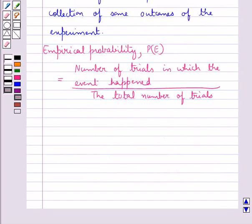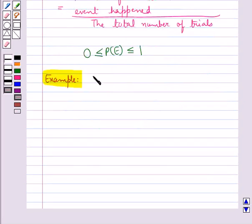The empirical probability depends on the number of trials undertaken and the number of times the outcomes you are looking for come up in these trials. And probability of an event E, that is P(E), lies between 0 and 1, that is it is greater than or equal to 0 and less than or equal to 1. Suppose that a coin is tossed 200 times.